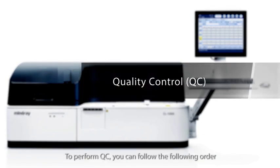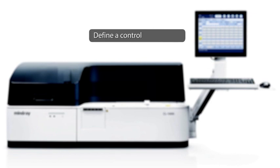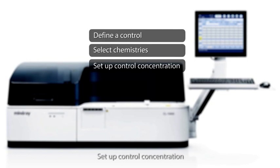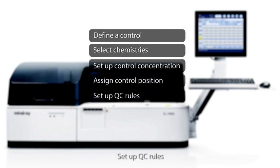To perform QC, you can follow the following order: Define a control, select chemistries, set up control concentration, assign control position, set up QC rules, run QC, and check QC results.